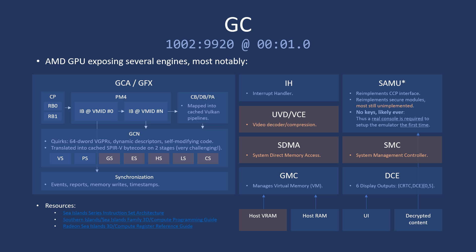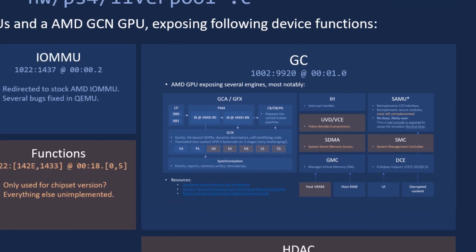We don't have keys and we don't need them — it's not our target to break SAMU in any way. We decrypt everything needed ahead of time on the actual console, so users will need a real console to set up the emulator for the first time. SMC — the System Management Controller — doesn't seem to be used by the kernel, which is great. Finally, the display controller engine exposes DCE devices numbered 0 to 5; number 1 is used for the actual display output, and the UI is connected to that.